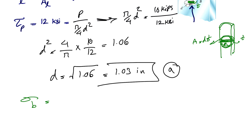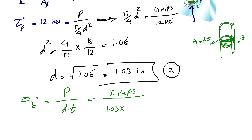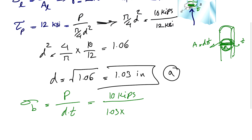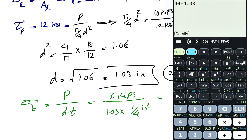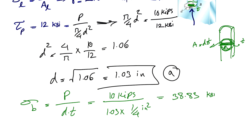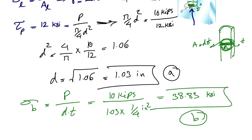The force is the same P, but the area is now D times T. So the average bearing stress equals 10 kips divided by D times T, which is 1.03 times one quarter. That gives 40 divided by 1.03, which equals 38.83 KSI. That is the answer for part B.